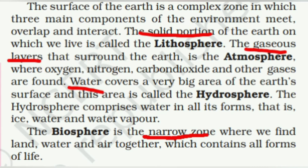The atmosphere is a thin gaseous blanket divided into five layers: troposphere, stratosphere, mesosphere, thermosphere, and exosphere. It is 78% nitrogen, 21% oxygen, and 1% others including CO2. The hydrosphere — Earth is the blue planet — has 71% water and 29% land, including glaciers, oceans, rivers, and underground water. Biosphere includes all forms of life and is called the narrow zone of contact where all three domains meet, ensuring the sustenance and value of living beings.